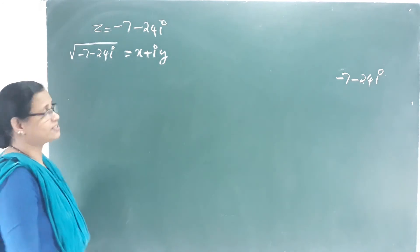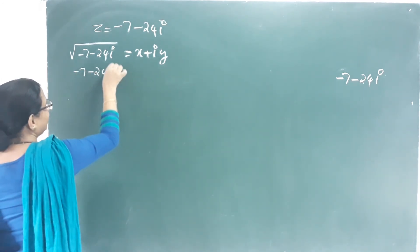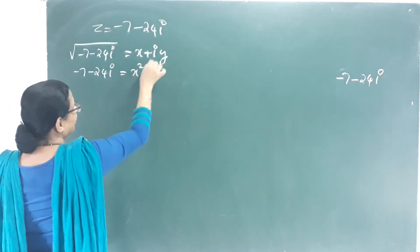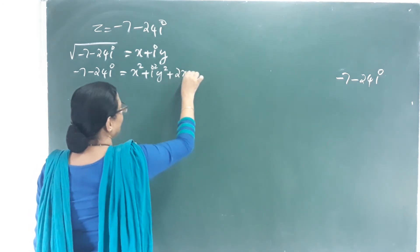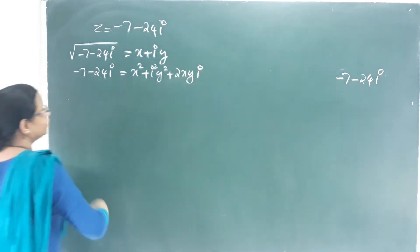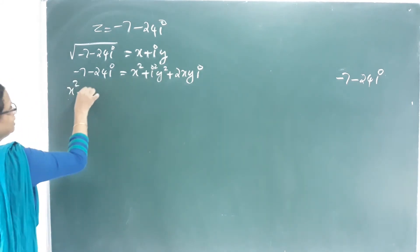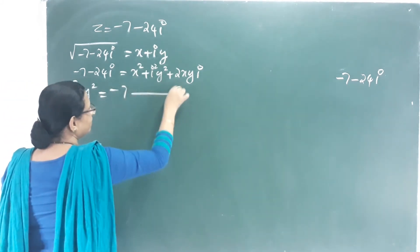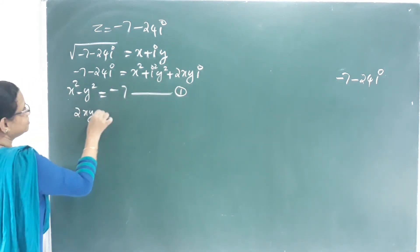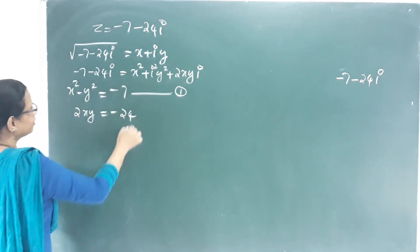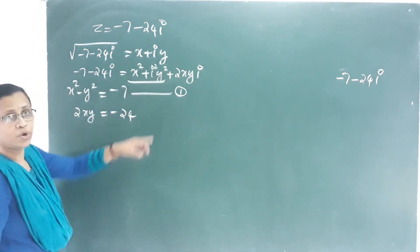Squaring both sides: (x + iy)² = x² + i²y² + 2xyi = x² − y² + 2xyi. Setting equal to −7 − 24i: Equation 1: x² − y² = −7, and Equation 2: 2xy = −24.